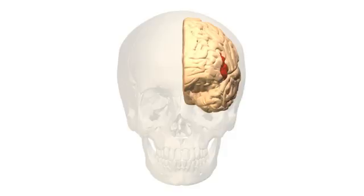Brodmann area 45 is part of the frontal cortex in the human brain. Situated on the lateral surface, inferior to BA9 and adjacent to BA46. This area is also known as pars triangularis. In the human, it occupies the triangular part of inferior frontal gyrus, and surrounding the anterior horizontal limb of lateral sulcus, a portion of the orbital part of inferior frontal gyrus. Bounded caudally by the anterior ascending limb of lateral sulcus, it borders on the insula in the depth of the lateral sulcus.